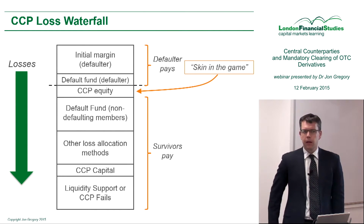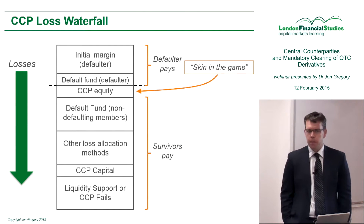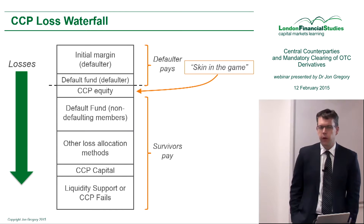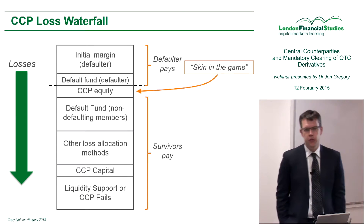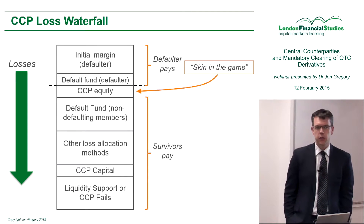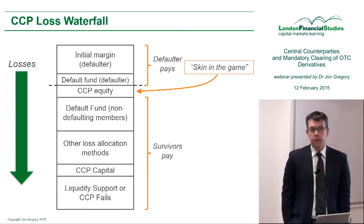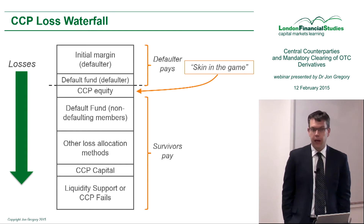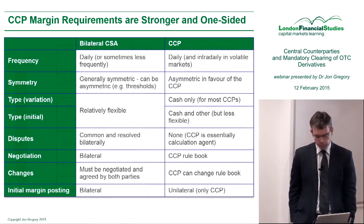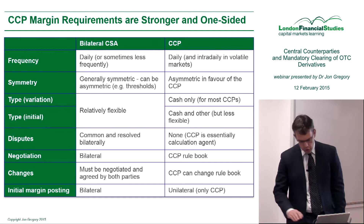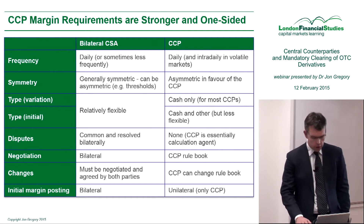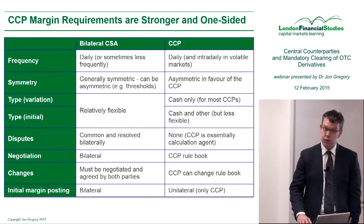I mentioned the financial resources the CCP has. This is the so-called loss waterfall, which defines how the CCP would respond if a clearing member defaults. You can see that a lot of things are going to be changing as a result of this structure.